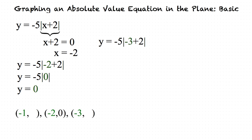Let's start by substituting negative 3 in first. Negative 3 plus 2 results in negative 1. Next, we multiply negative 5 by 1. Why do we multiply by 1 and not negative 1? We multiply by 1 because we are asked for the absolute value of negative 1, which by definition is its distance from 0, which is 1. Our final step is to multiply negative 5 and 1 to get our y value of negative 5.